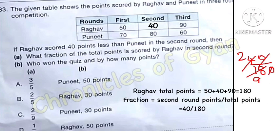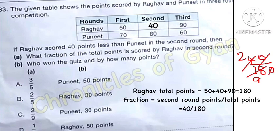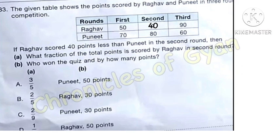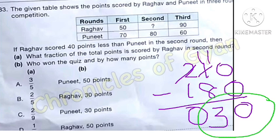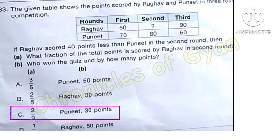The fraction 2/9 is seen in option C. For Question B: who won the quiz and by how many points? Raghav's total is 180, Puneet's total is 210. Since 210 is greater, Puneet won. By how many points? 210 minus 180 = 30 points. Puneet won the quiz by 30 points, which is shown in option C.